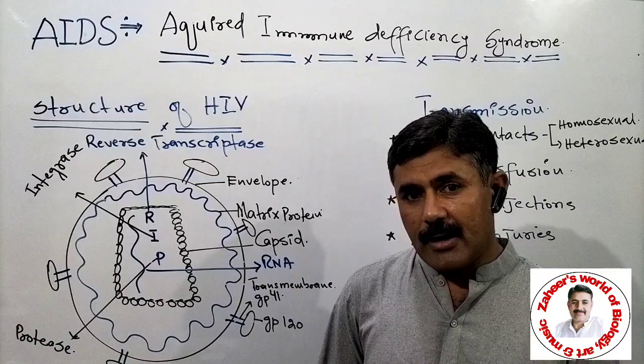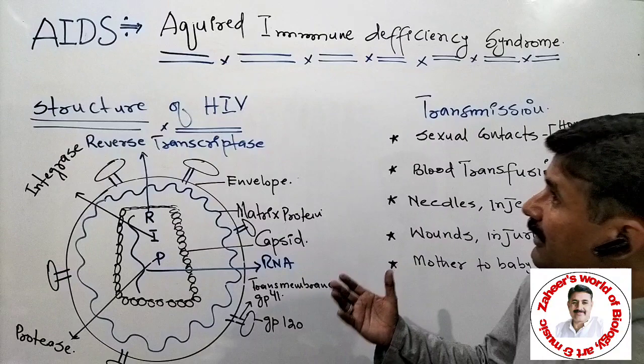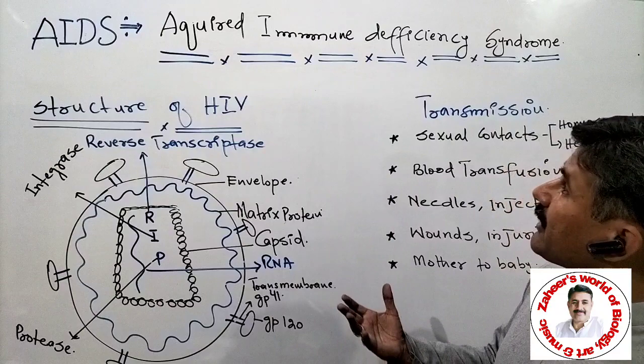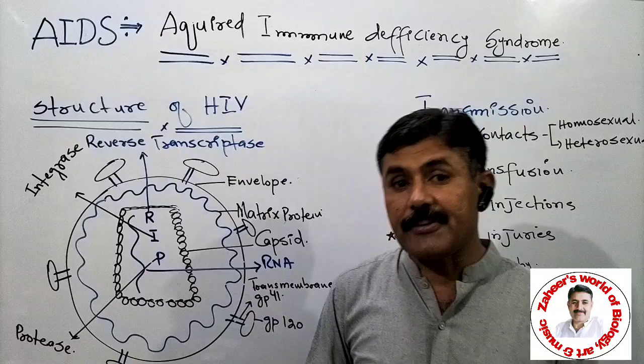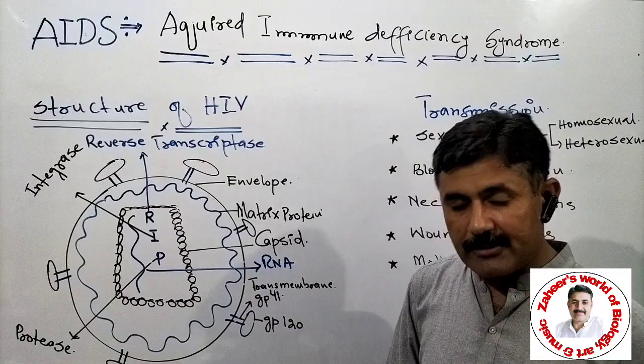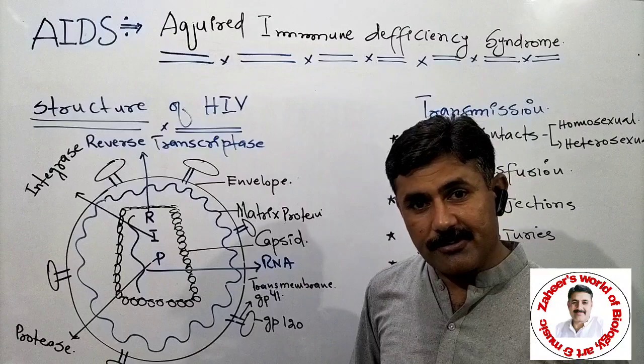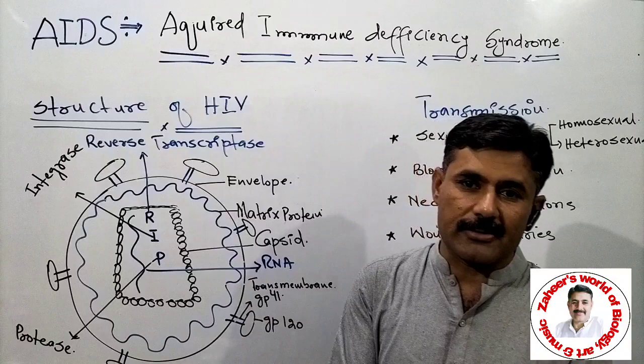Today we are going to study AIDS — Acquired Immune Deficiency Syndrome. As the name says, it is a problem that we acquire through life. What we acquire is immune deficiency. It's a problem where we acquire the deficiency of the immune system, and when that happens, we suffer from a combination of several disorders and diseases — a syndrome. Therefore, it is called Acquired Immune Deficiency Syndrome.